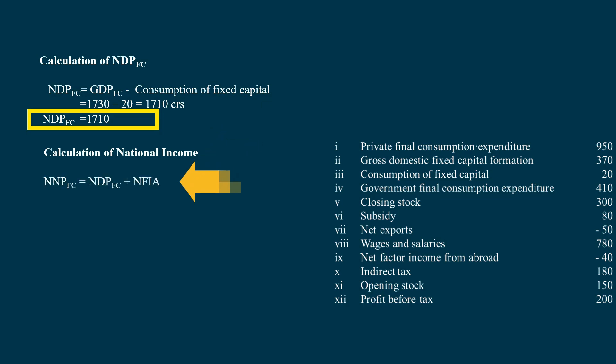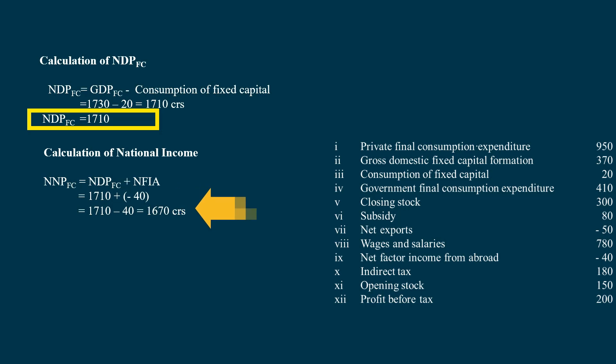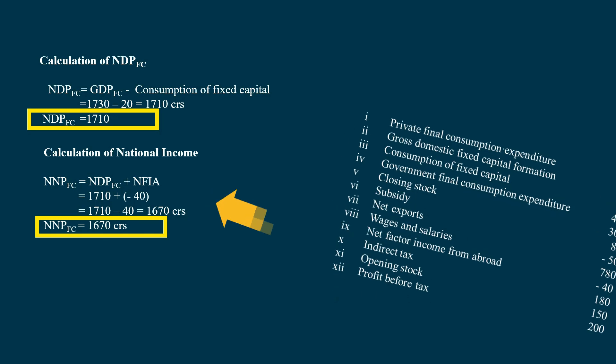National Income = Net National Product at Factor Cost = Net Domestic Product at Factor Cost plus Net Factor Income from Abroad = 1,710 + (negative 40) = 1,710 minus 40 = 1,670 Crores.